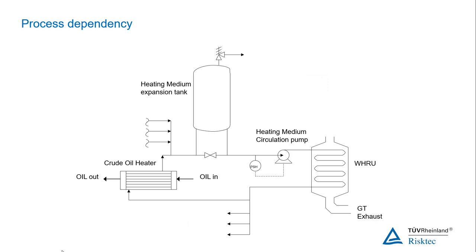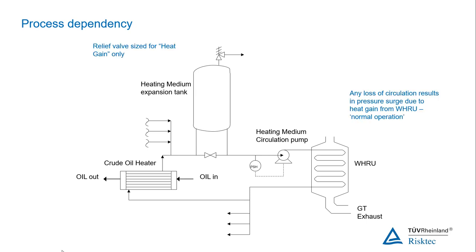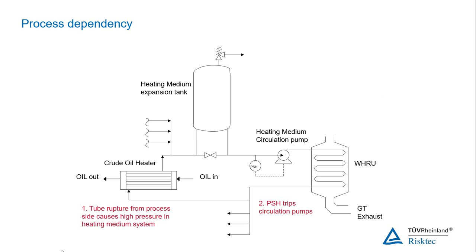This second case is an example of process dependency. A process heating medium is circulated between the waste heat recovery unit and the crude oil heater. Any loss of circulation results in a pressure surge due to heat gain from the waste heat recovery unit, and the expansion tank is adequately protected by a relief valve for that cause. But if a tube rupture occurs, it causes high pressure in the heating medium system, which results in the pump tripping. The pump trip causes an additional pressure increase due to heat input from the waste heat recovery unit, and the expansion tank was not adequately protected from the burst tube and heat gain scenario.